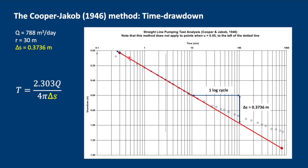The delta S is what we need to calculate transmissivity using this equation here. If we extend our straight line to the point where drawdown is zero, we have a time value which is t0. In this case it's 0.25 minutes and we need t0 in order to calculate the storativity using this equation here.